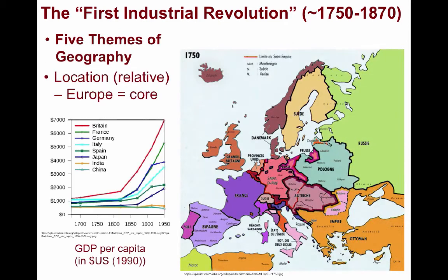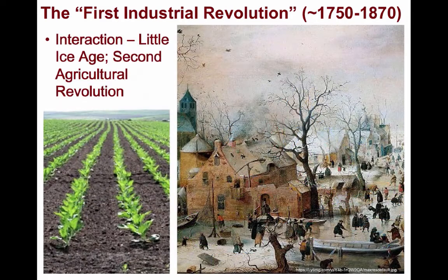Looking at the five themes of geography, we can see some of the reasons why Britain was in the right place, at the right time, with the right resources and conditions. Starting with location, Europe at the time was the core region of the world with more money and technology than anywhere else — Britain's favorable relative location was a huge advantage. As for human-environmental interaction, the colder temperatures due to the Little Ice Age had pushed Europe into the Second Agricultural Revolution, in which many machines were devised to replace human and animal labor, starting the process of mechanization that would be taken to a greater scale through the First Industrial Revolution.